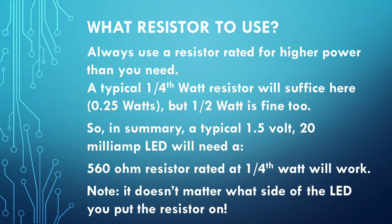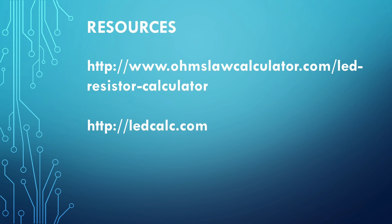The bottom line for this example is that you need a 560-ohm resistor rated at a quarter watt. Also, it does not matter which side of the LED you place the resistor on — it will have the same impact either way. As long as it's in the circuit, you'll have the current resistance needed to prevent the LED from getting fried.